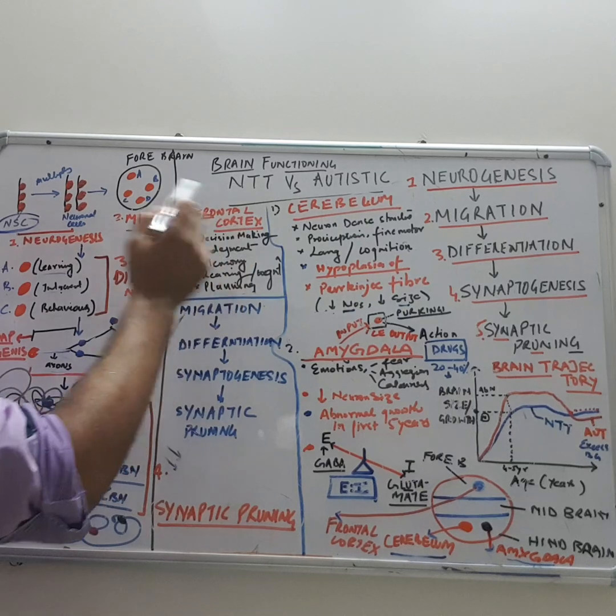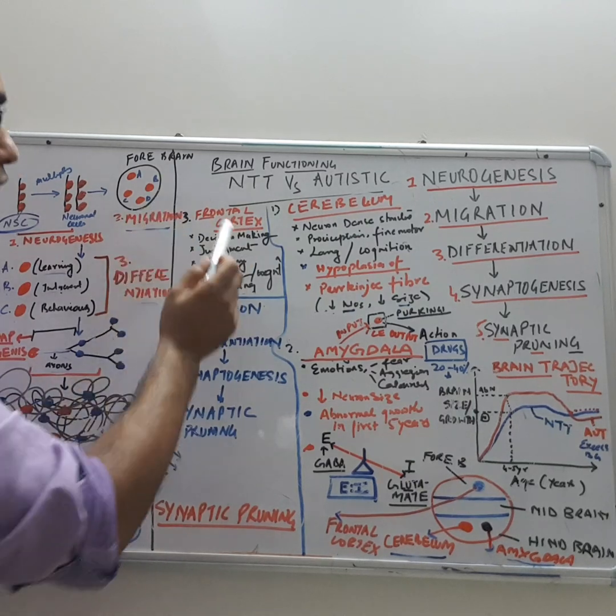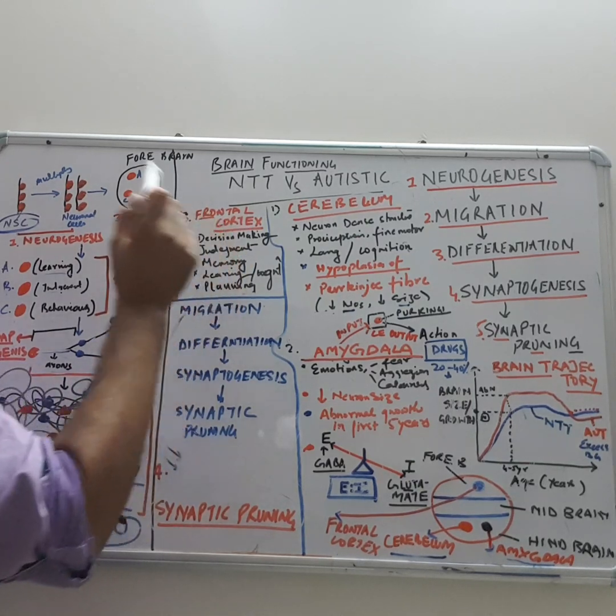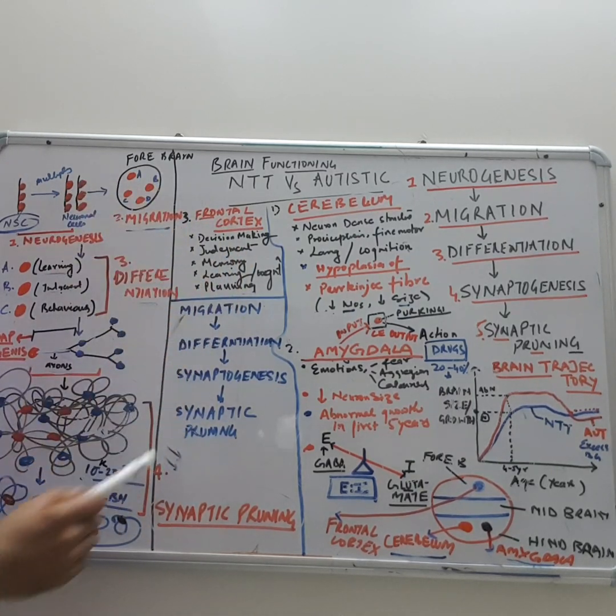Now coming to the third portion — the frontal cortex. The frontal cortex is the most developed portion of the brain.